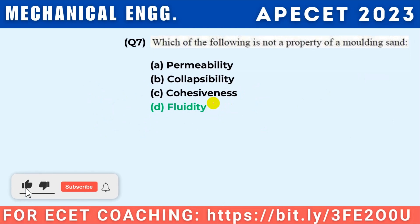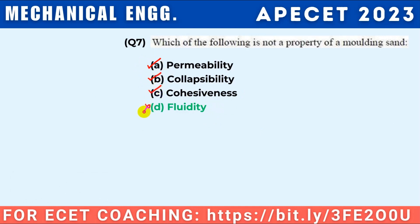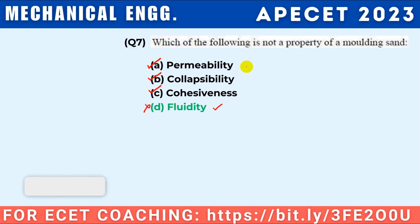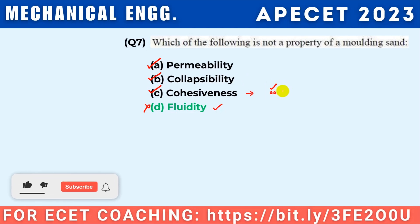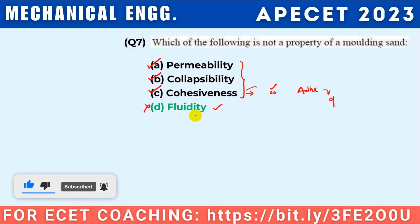Which of the following is not a property of moulding sand? Permeability is a property — it is the gas-escaping capacity of the sand. Collapsibility is a property — the sand collapses during solid contraction. Cohesiveness is attraction between similar sand particles. Adhesiveness is attraction between different particles. Fluidity is not a property of moulding sand — it is a molten metal property. So your answer is fluidity.